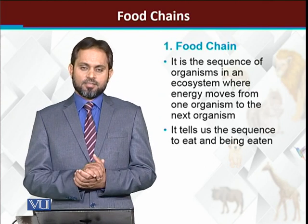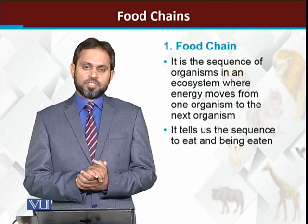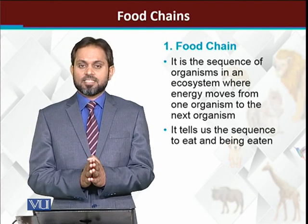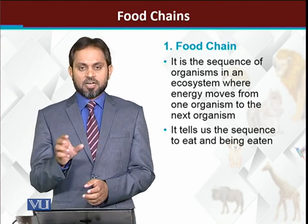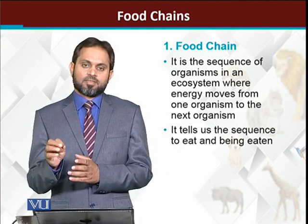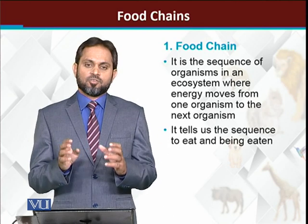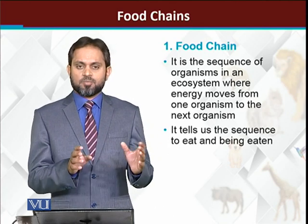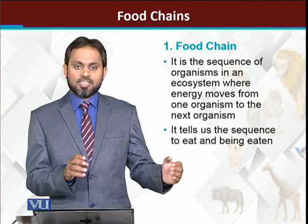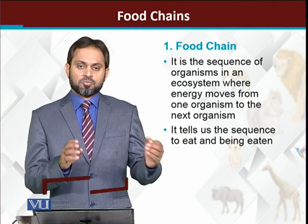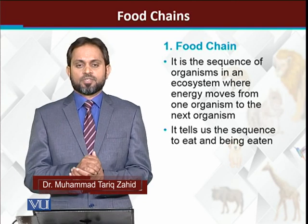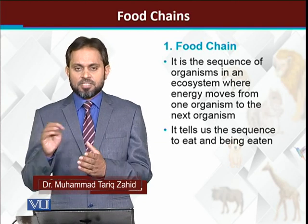So first, the definition of food chains. The food chain is basically the sequence of organisms within an ecosystem through which energy travels — from one organism to a second, from second to third, third to fourth, fourth to fifth. This is a sequence through which energy travels.